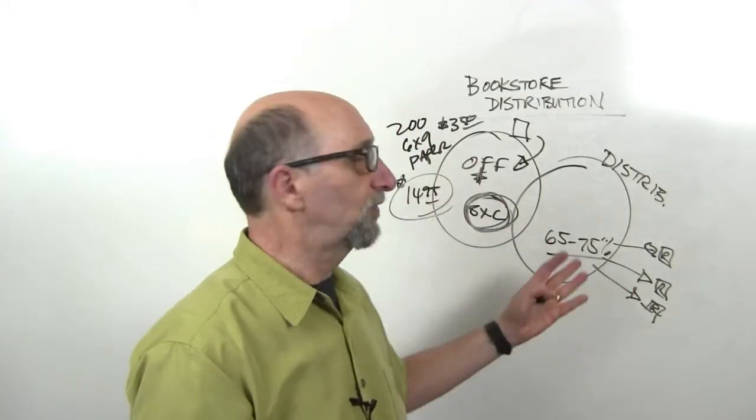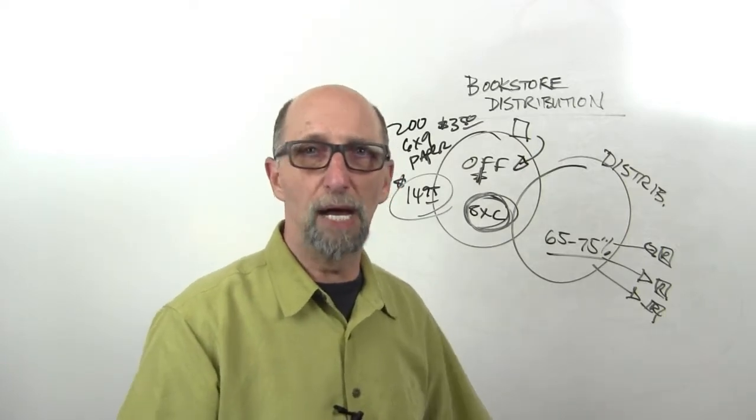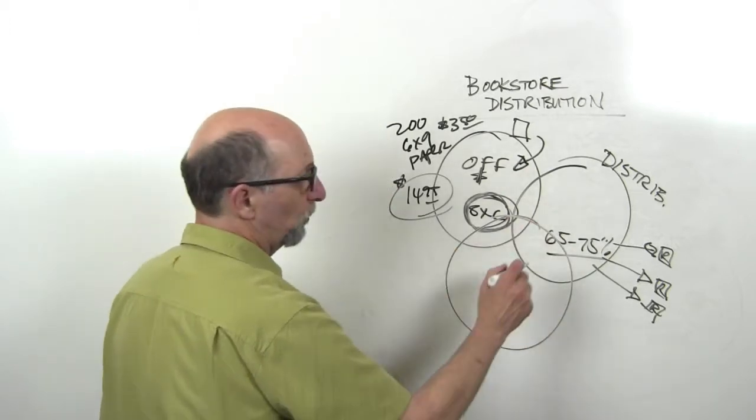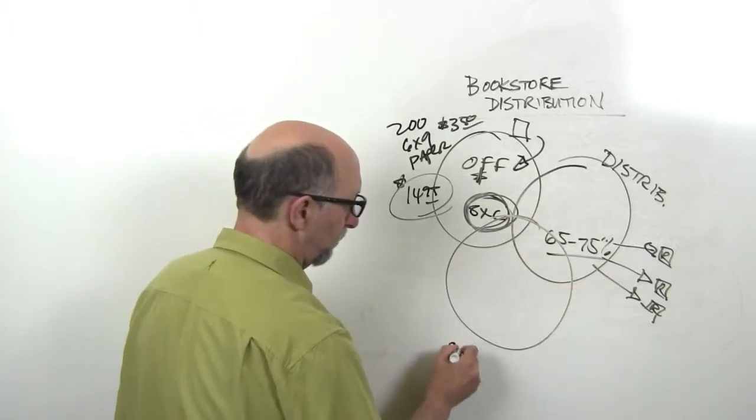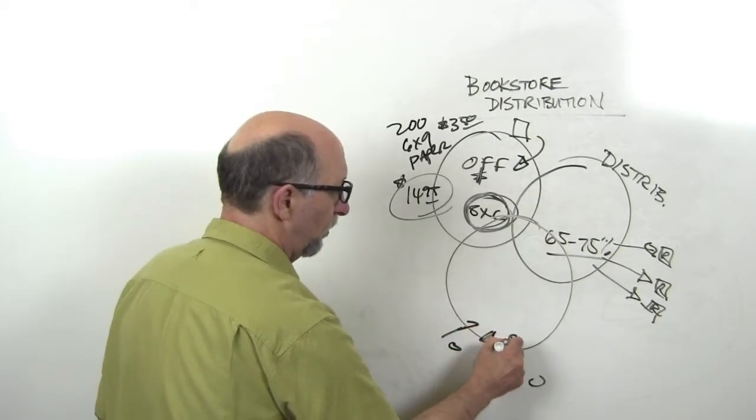But this is an incomplete picture, isn't it? We've got books, and we've got them spread out. Where are the people? Who's going to buy them? You need another piece. You need to not only get books into the bookstore, you've got to be able to drive people into the bookstore to buy the books.